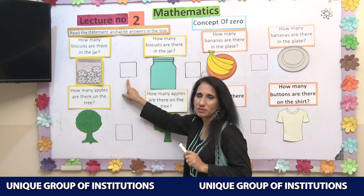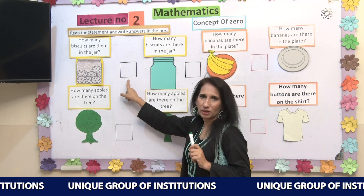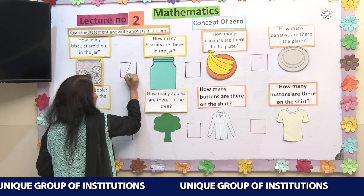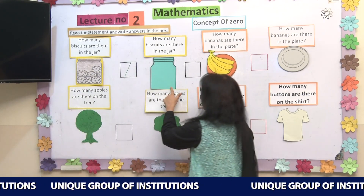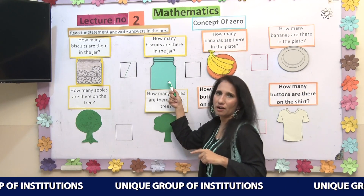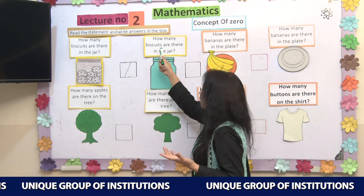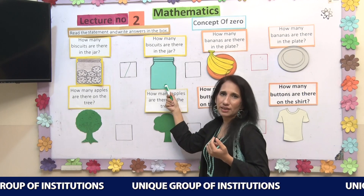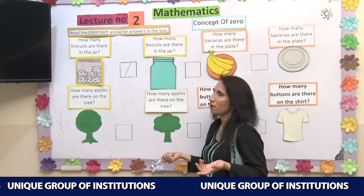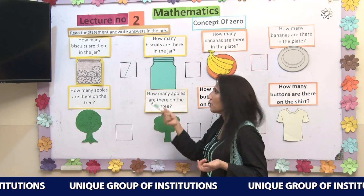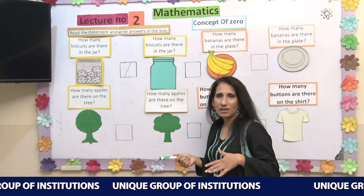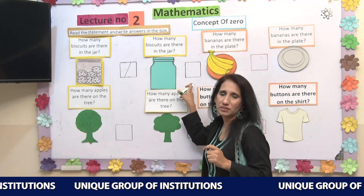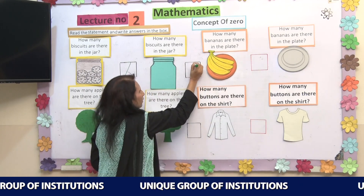Here you can see a box. I am going to write number 7 in the box. Here is another jar, but this jar is empty. The caption is the same: how many biscuits are there in the jar? There is no biscuit — nothing in the jar. As I already told you, nothing means zero. So I am going to write number 0 in this box.